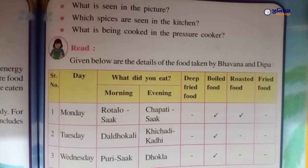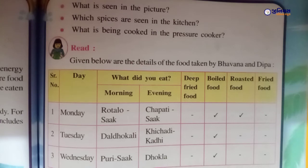Cereal activity for the day: What did you eat in the morning or evening? Deep fried food, boiled food, roasted food, fried food — tick the option. First day, Monday morning: rotlo shak. Evening: chapati shak — boiled food. Second day: roasted food. Third day: boiled food.